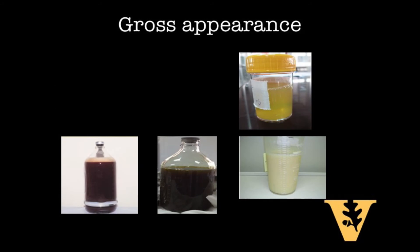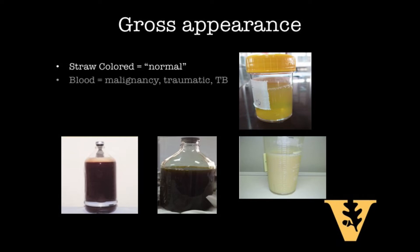After performing a paracentesis, we should take a look at the fluid that we've collected for more clues, because our eyes are key diagnostic instruments. Normal peritoneal fluid is a translucent straw color, but this appearance can change quickly based on added particulates. Blood in our ascitic fluid sample is easy to distinguish, and a persistent presence of blood should elevate our suspicion of malignancy and TB in our differential diagnosis.